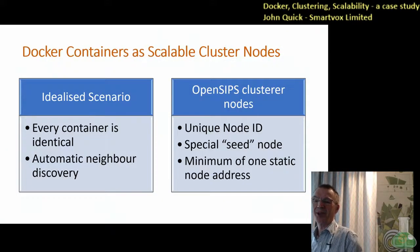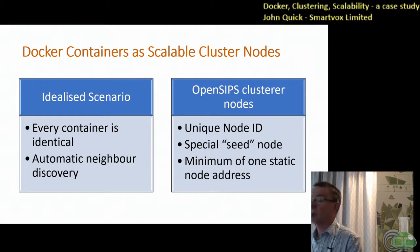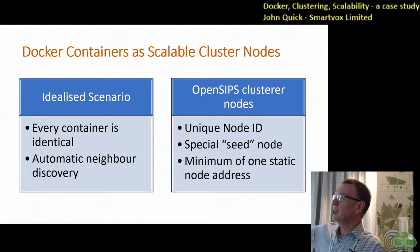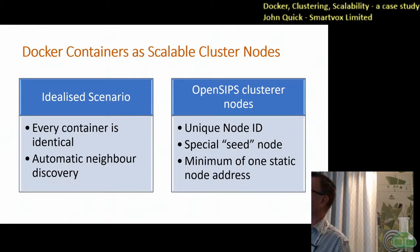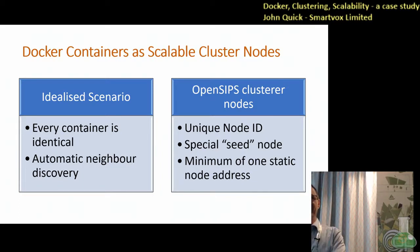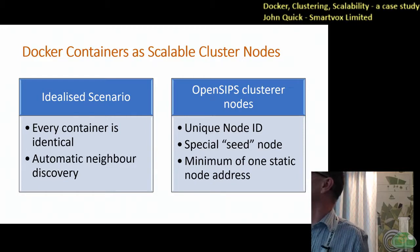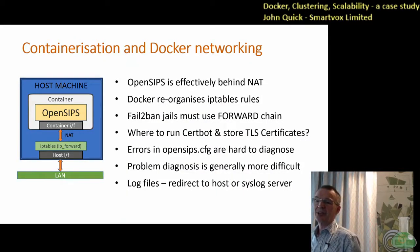Docker-related issues I found: in the idealized scenario, every container is identical and you'd have automatic neighbor discovery, but this didn't really fit with the OpenSIPS cluster module as I would have liked. Every node in the OpenSIPS cluster module has to have a unique node ID, which is embedded in the OpenSIPS CFG file. There's also this special seed node — I'd be really pleased if they could do away with that. You can't have auto neighbor discovery because you've got to have one static IP address for that to work. It would be fantastic if the team could look at that sometime.